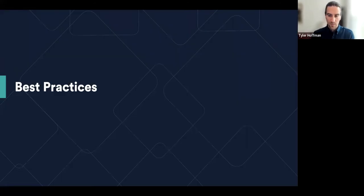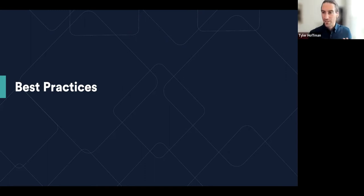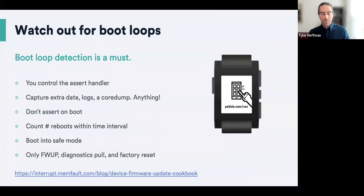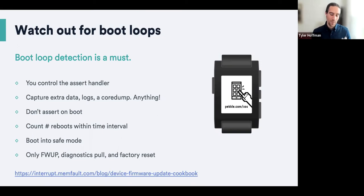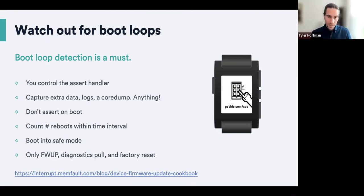The final section is best practices — there are so many things we've learned over time. The most important one: when you start adding asserts, a boot loop may present itself. If you have an assert during the boot initialization phase, there is a high likelihood you're going to have a boot loop, especially if that hardware or programming error doesn't fix itself. Boot loop detection is a must — counting the number of resets that happened in a particular window of time. At Pebble we used three within 15 minutes; I've seen others use 10 within one minute.